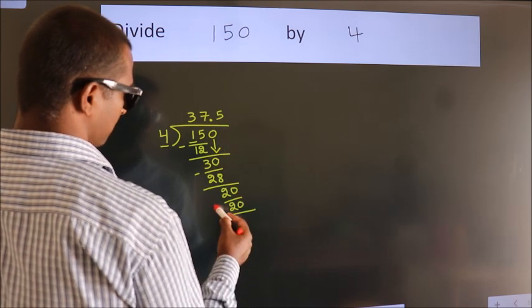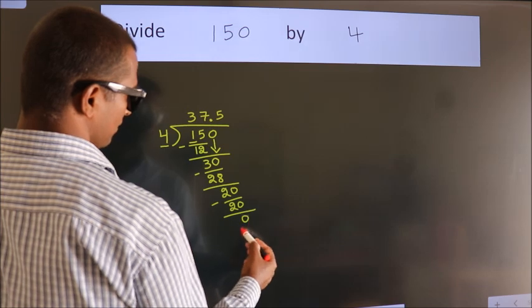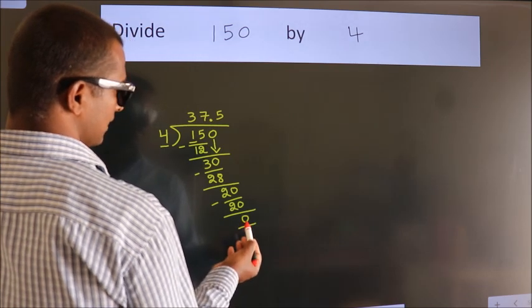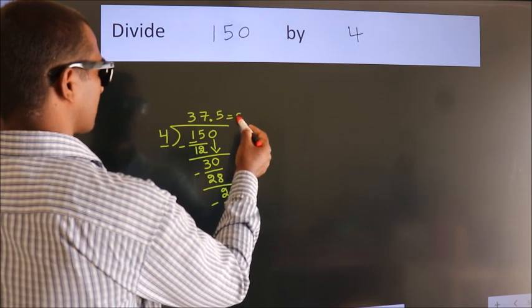Now we subtract. We get 0. We got remainder 0. So this is our quotient.